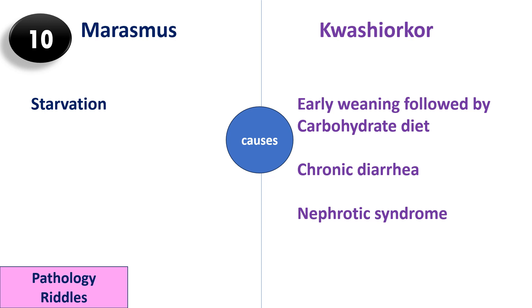Kwashiorkor can also occur if the patient has nephrotic syndrome. So these were the differences between marasmus and kwashiorkor. Please do like, share, and subscribe. Till we meet the next time, this is Dr. Bismay signing out.